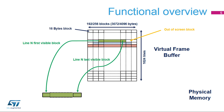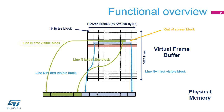In this example, out-of-screen blocks, shown here in white, won't be mapped into the physical memory. For each line, the first visible block and the last visible block are stored in the lookup table. Only the visible blocks of each line will be stored in the physical memory. The operation is repeated for each line, indicating the first block and the last block.